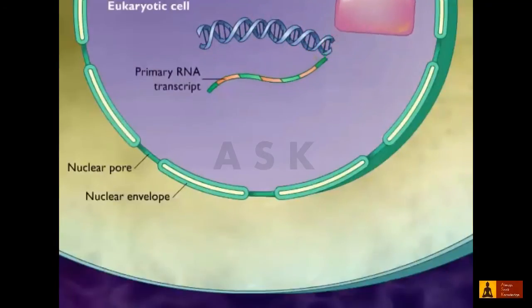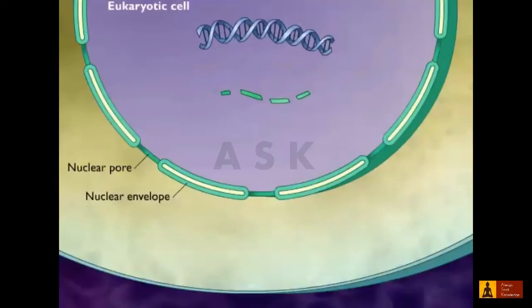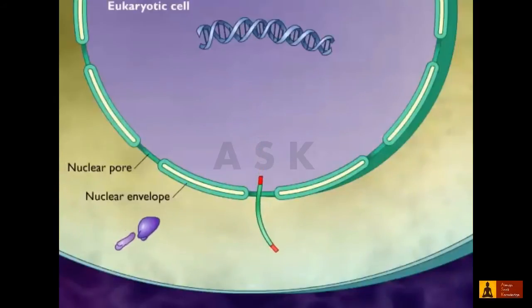Eukaryotic mRNAs are modified before they are translated. Introns are removed and the remaining exons are spliced together. A 5' cap and a 3' poly-A tail are added. The processed mRNA then travels to the cytoplasm where translation occurs.